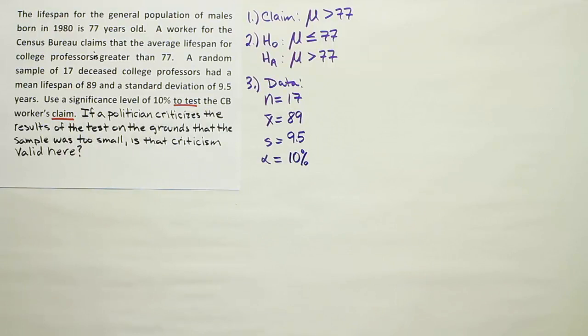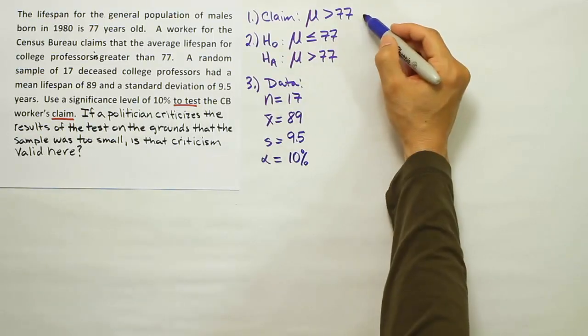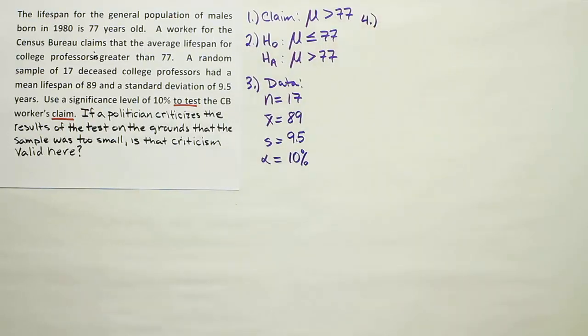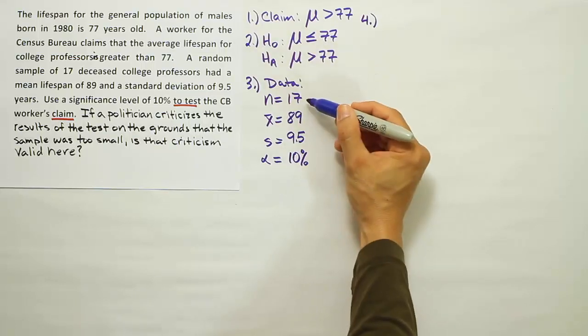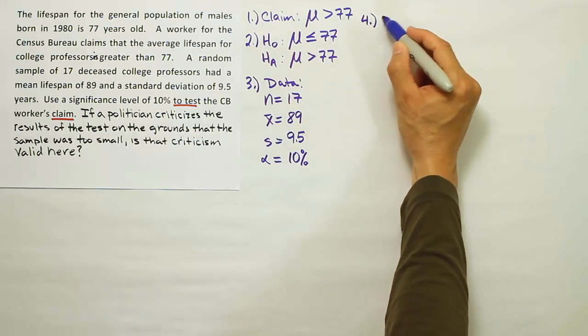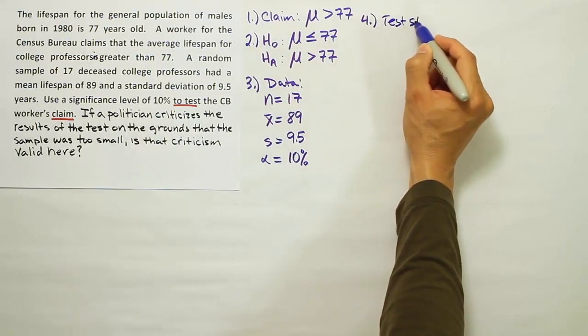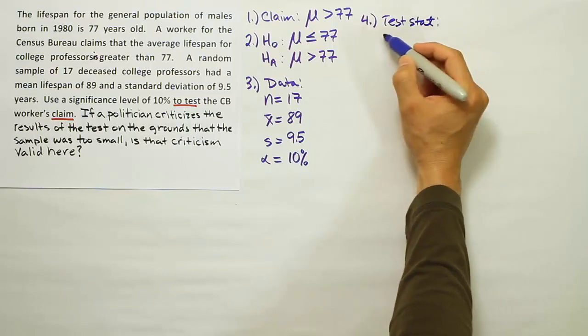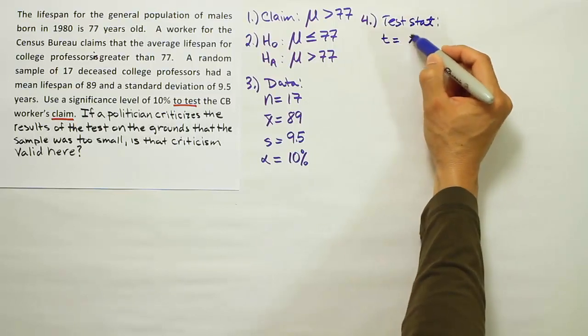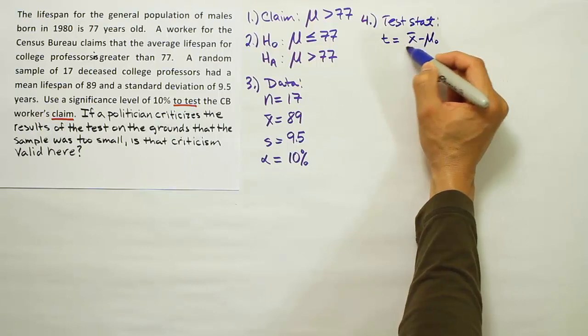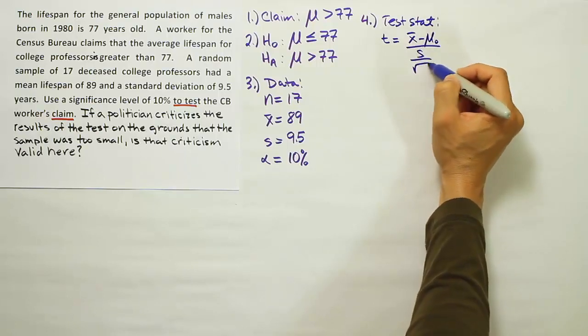Once you have your data, your next step is to use that data to calculate your test stat. For a test about the mean, when the sample size is small, we will use the test stat formula T equals x̄ minus μ₀ divided by S divided by the square root of n.